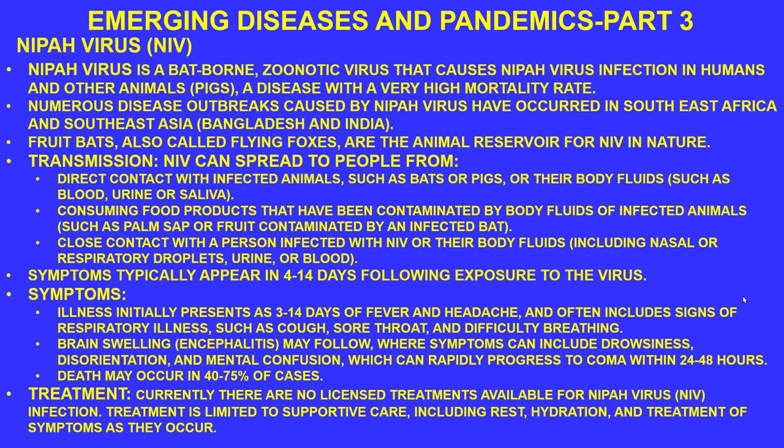Contaminated palm sap or fruit contaminated by infected bats can also transmit the virus. Close contact with an infected person or their body fluids — nasal or respiratory droplets, urine, or blood — is another route. Symptoms typically appear four to 14 days following exposure.